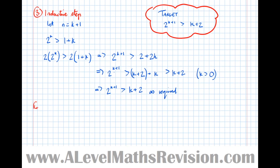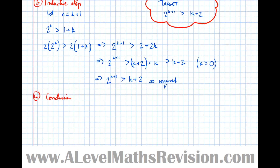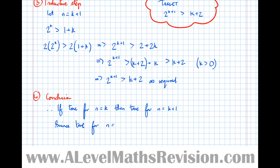Step four: the conclusion. Therefore, if true for n equals k, then true for n equals k plus 1. Since true for n equals 2, then true for all integers n greater than or equal to 2.